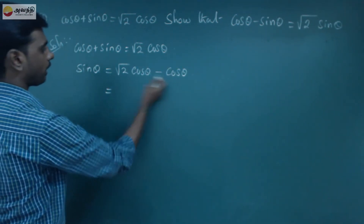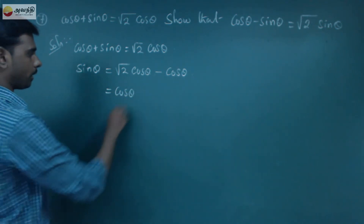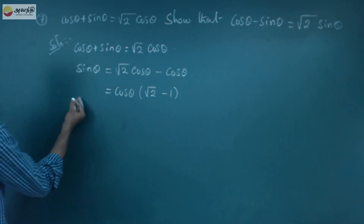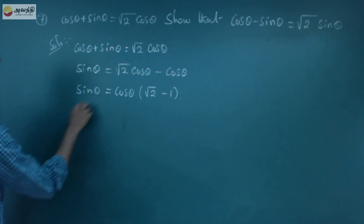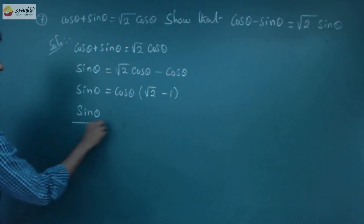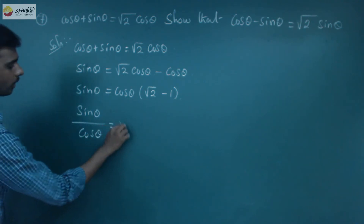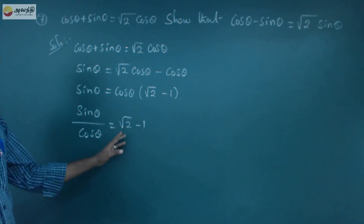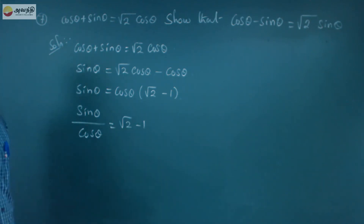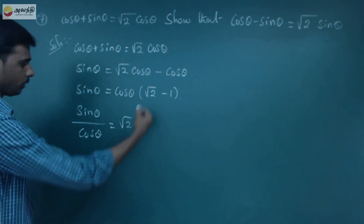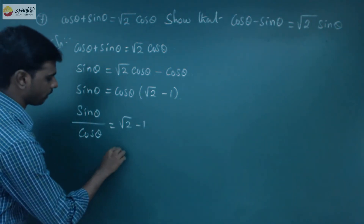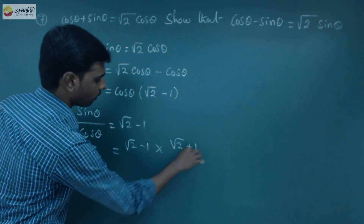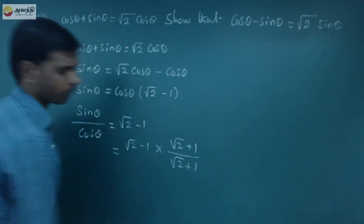That is equal to cosθ times (root 2 minus 1), because cosθ is common inside. So sinθ divided by cosθ equals root 2 minus 1. Since root 2 minus 1 is an irrational number, we will multiply the numerator and denominator by the conjugate: root 2 minus 1 into root 2 plus 1, divided by root 2 plus 1.